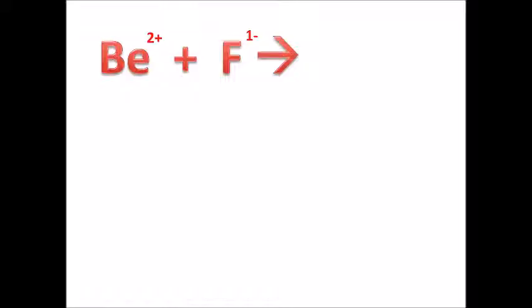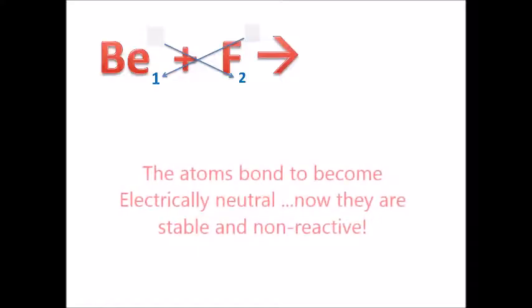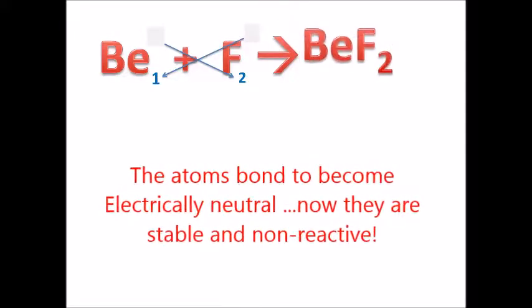Now watch what I do with the oxidation numbers — the positive two and the negative one. I'm going to drop the signs and then cross those numbers over; those numbers are going to be the subscripts of the beryllium and the fluorine symbols. The one comes over as the subscript for the beryllium, and the two comes over as the subscript for the fluorine. I now have Be₁F₂, which tells me the ratio that will produce an electrically neutral product, BeF₂.